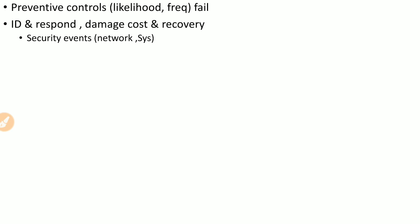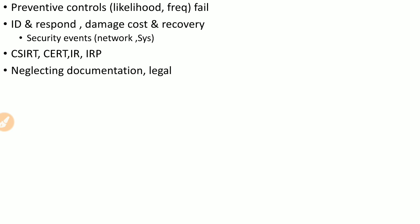A precursor to an information security breach can be security events happening over the network or system. The Cyber Security Incident Response Team (CSIRT) or Computer Emergency Response Team (CERT) are responsible for carrying out IR using an Incident Response Platform (IRP) — a tool that automates the playbook for incident response. For example, IBM has a tool known as Resilient. One neglected aspect is documentation, which is very important as it may be needed for legal purposes, and it is difficult to recall all steps taken during incident response.